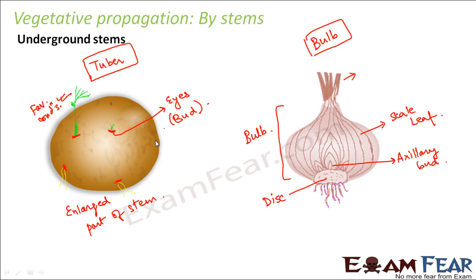Ginger is another example where a modified stem is found underground. The modified stem is used for food storage and also has buds which can give rise to new plants. These are examples of how certain structures which might not look like a stem are basically part of a modified stem.